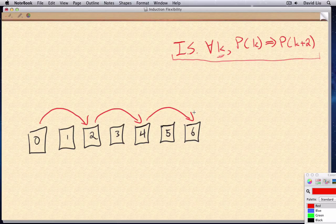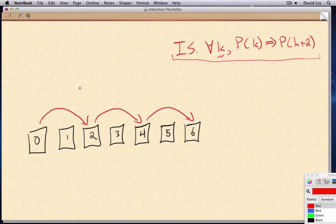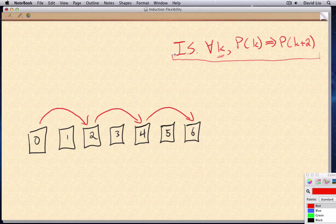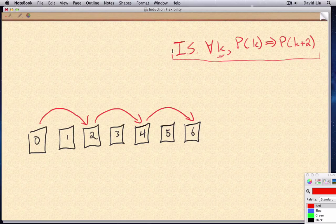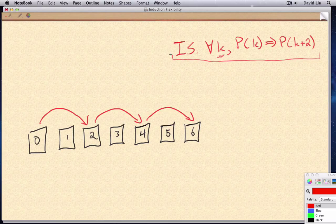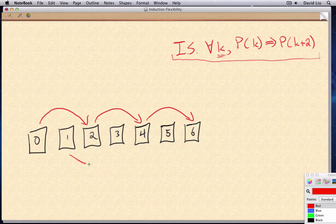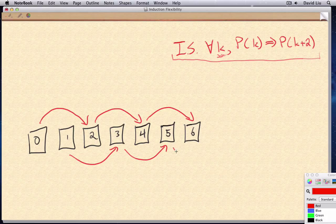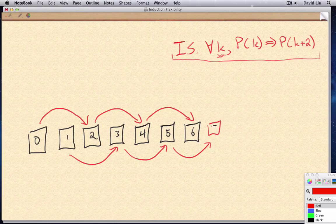And certainly, these links are part of this induction step. But because we haven't assumed anything about k here, in fact, we've proven these links as well. p of one implies p of three, p of three implies p of five, p of five implies p of seven, etc.